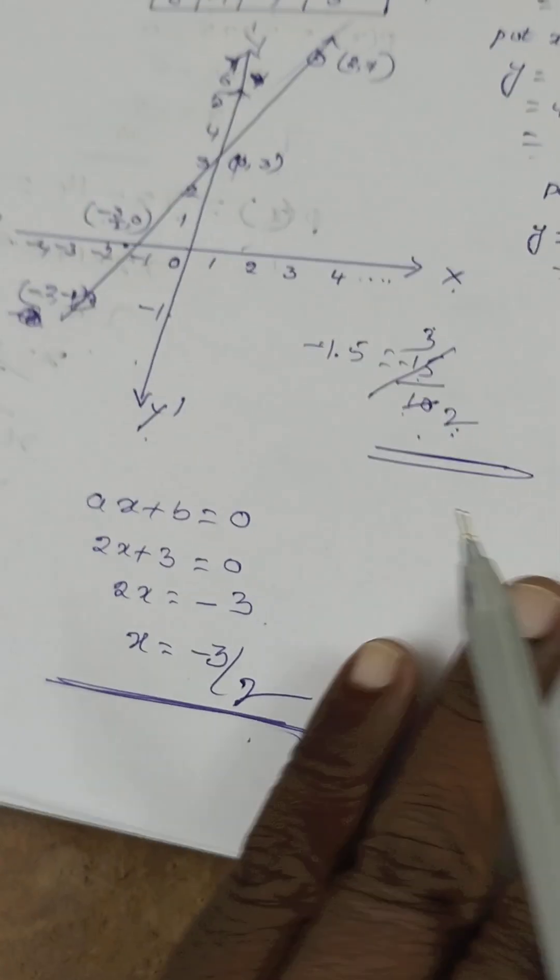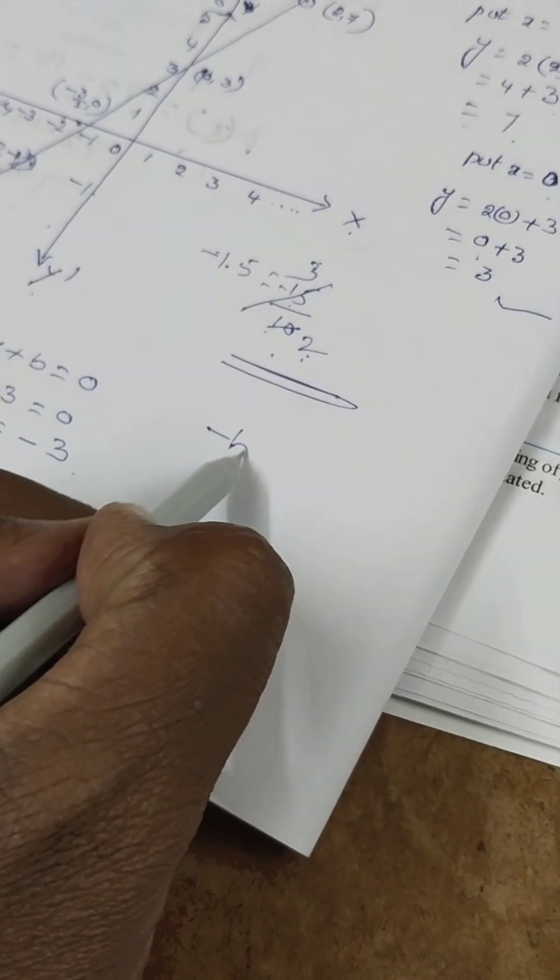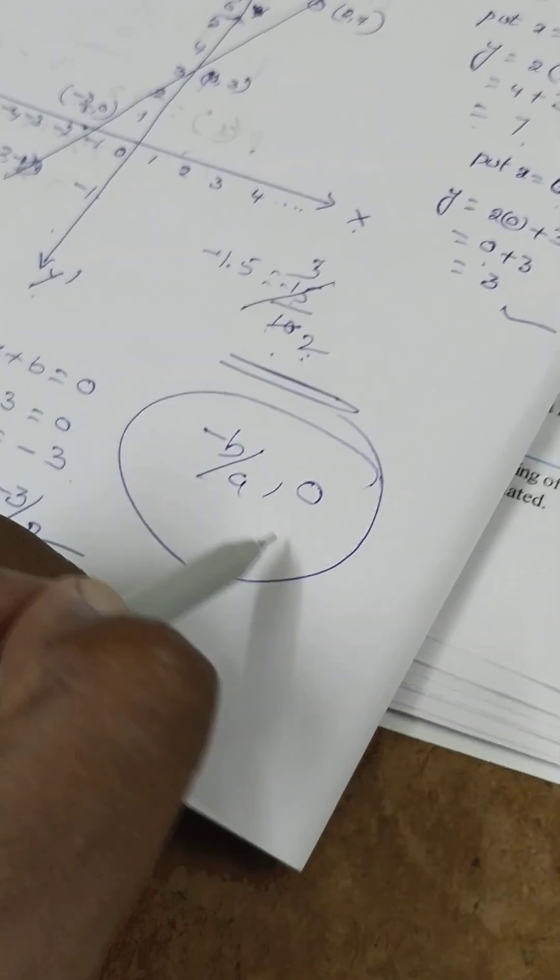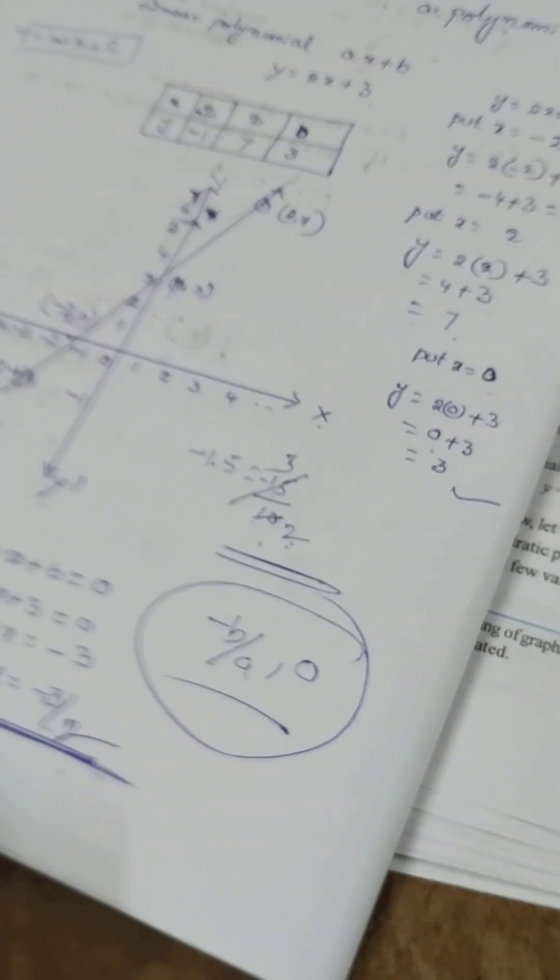So this value is at minus b by a comma 0. The zero of the polynomial is minus 3 by 2.